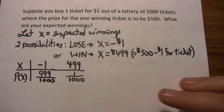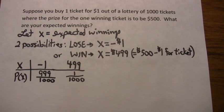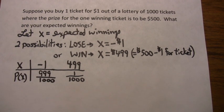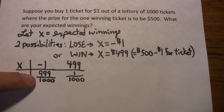So there's your PDF. Very simple. You lose $1 or you win $499. The probability of winning that 499 is one ticket out of 1,000. The rest of the tickets are losers.